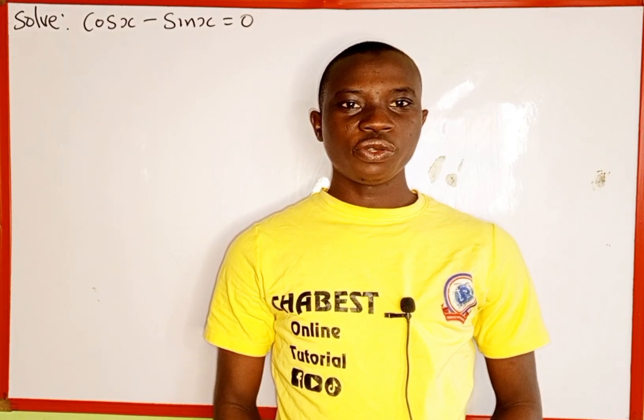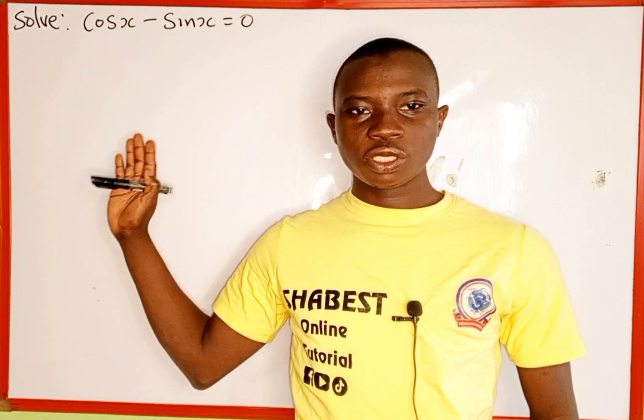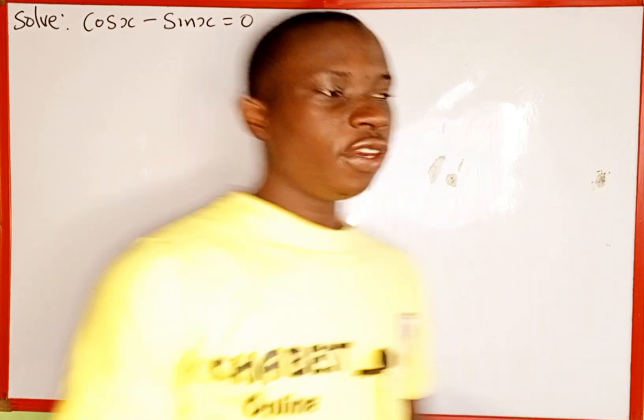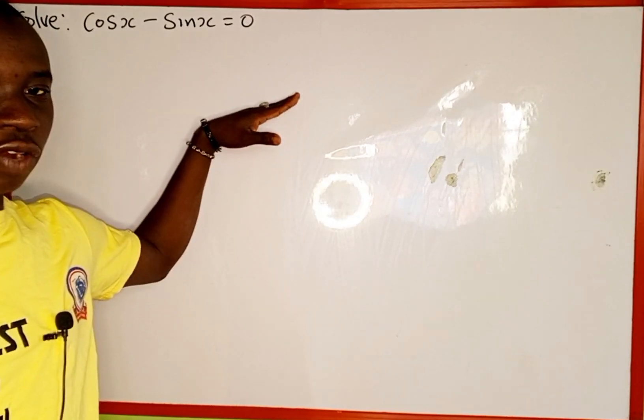Hello everyone, you are welcome back to Shabbat's online tutorial. In today's tutorial, we are going to learn how to solve for the value of x from this trigonometry equation. The given equation is cos x minus sin x equals zero, and we are going to solve for the value of x.